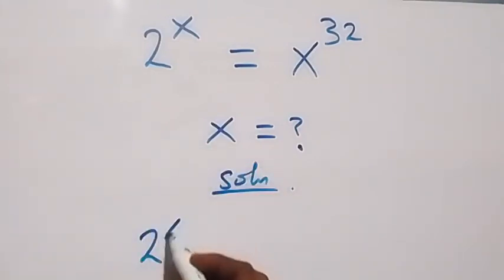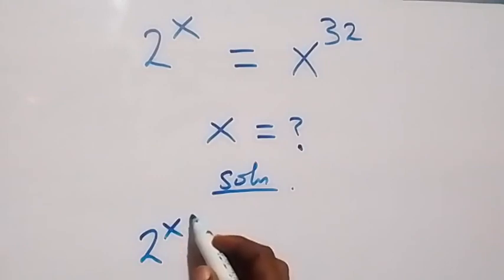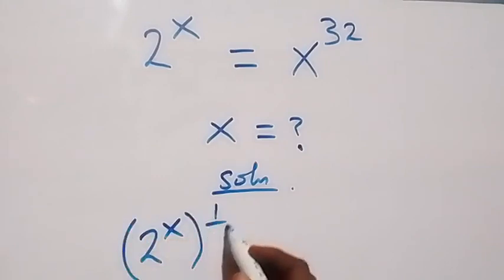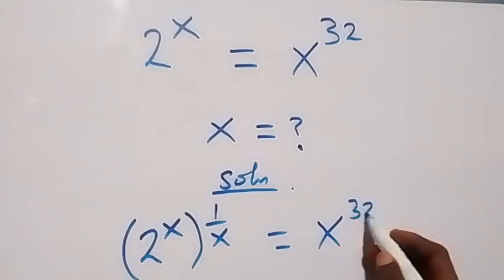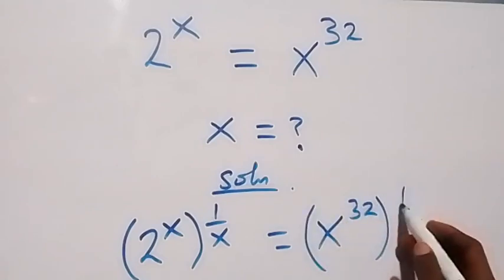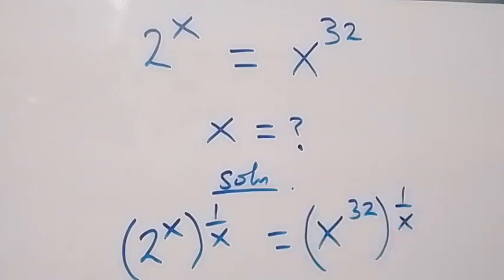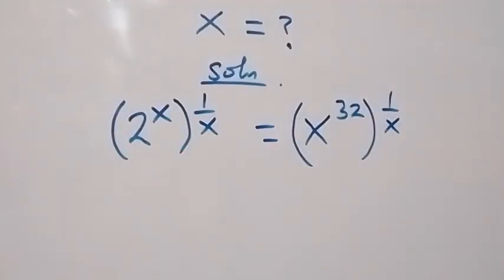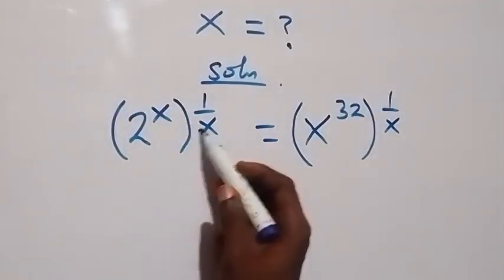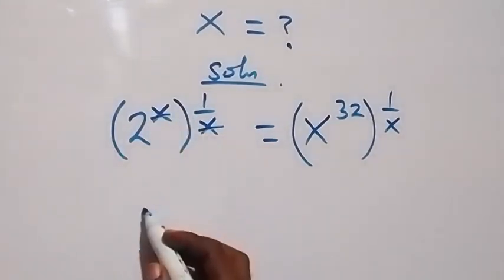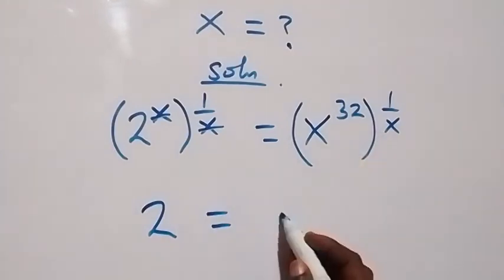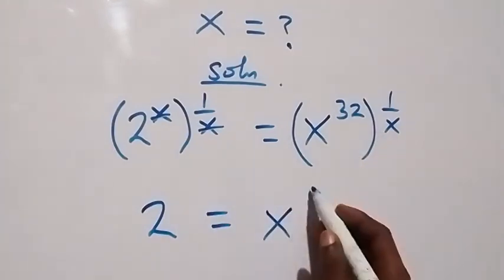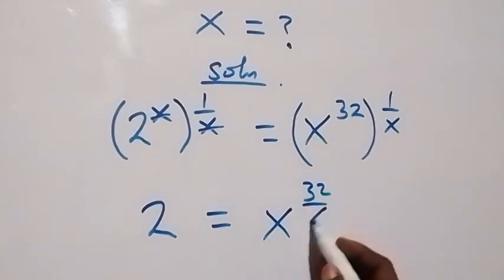That is, we have 2 raised to power x, then raised to power 1 over x. Also equals to x raised to power 32, then raised to power 1 over x as well. From the law of indices, this power multiplies and here x will cancel x. Then we are left with 2, which equals to x raised to power 32 over x.